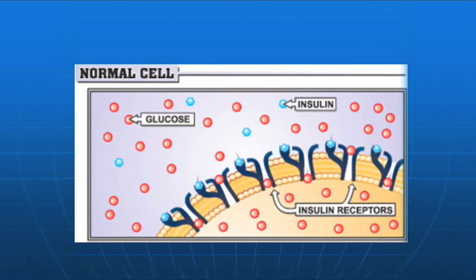If you look in the body of the cell, which is the yellow, you'll see all these little red glucose molecules showing that the cell has energy, the cell has nutrition, and it's been adequately fed.